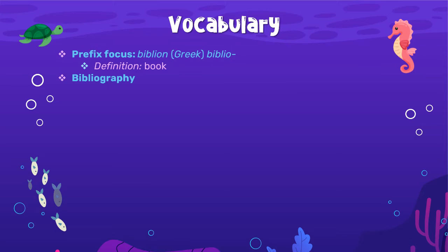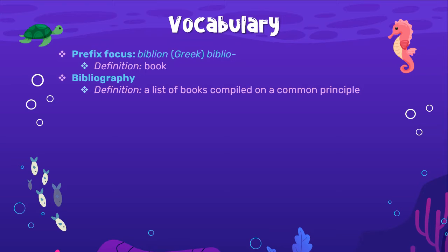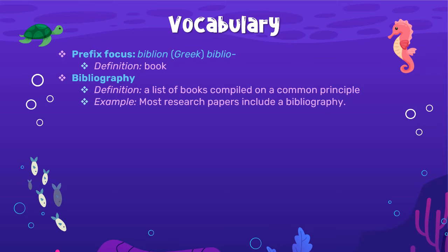So our first word is bibliography. We know that 'graphy' has to do with write. So what is bibliography? It's a list of books compiled on a common principle. So if you have a bunch of books about a certain subject, that is your bibliography — you would write out that list. When you write a paper and you need to write the sources that you used, you have to list out whatever sources you studied and quoted. And that is your bibliography, your list of books. Most research papers include a bibliography.